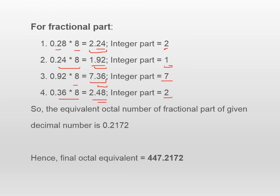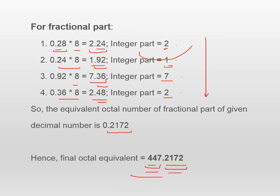The octal number formed by writing those integer parts from top to bottom is 2172. So 0.2172 is the octal number obtained by converting the decimal 0.28. The final combined number is 447.2172, where 447 is the octal conversion of the integer part and 0.2172 is the octal conversion of the fractional part. So your final octal equivalent is 447.2172.